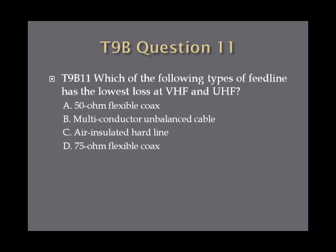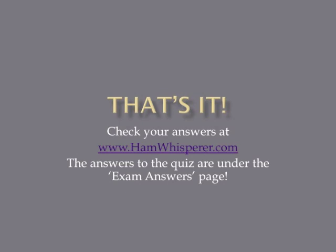And question 11. Which of the following types of feed line has lowest loss at VHF and UHF? A. 50 ohm flexible coax. B. Multi-conductor unbalanced cable. C. Air insulated hard line. Or D. 75 ohm flexible coax. And that completes lesson 32 and the T9B section.